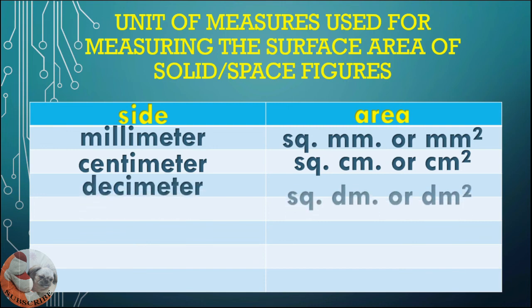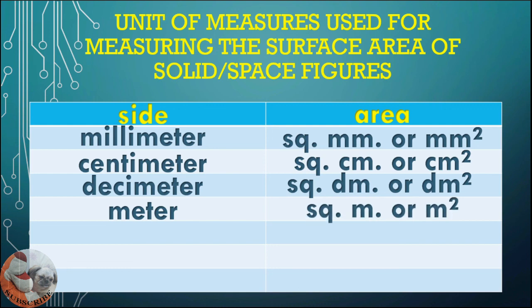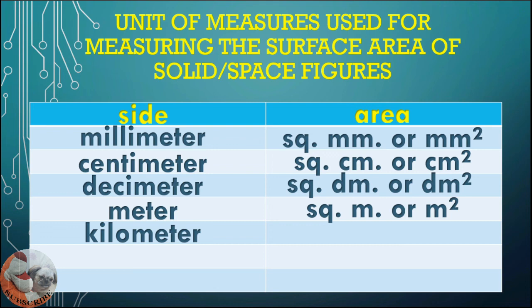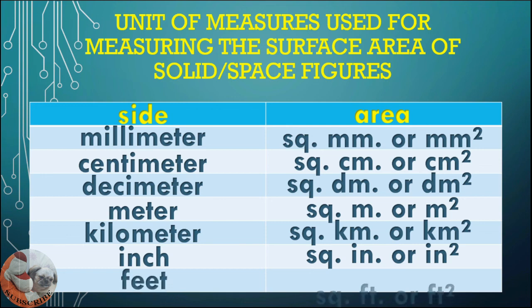If the side is in decimeters, the area is square decimeters. If the given side is in meters, the area will be square meters. If it is in kilometers, the area will be square kilometers. If the given is in inches, the area will be square inches. If the given side is in feet, the area will be square feet.